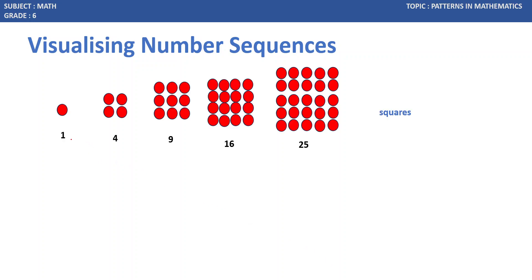Next, 1 can be written in the form of a square — same length, same width. 4 can be written as 2 into 2, so 2 by 2. 9 can be written as 3 rows and 3 columns. 16 can be written as 4 rows and 4 columns. And 25 similarly, 5 rows into 5 columns. These are square numbers because 1 equals 1 squared, 4 equals 2 squared, 9 equals 3 squared, 16 equals 4 squared, and 25 equals 5 squared. This is the square representation.